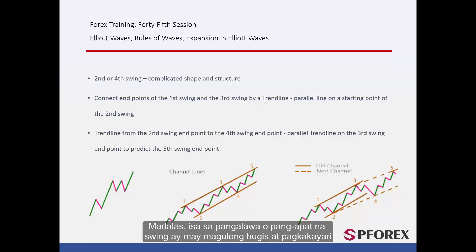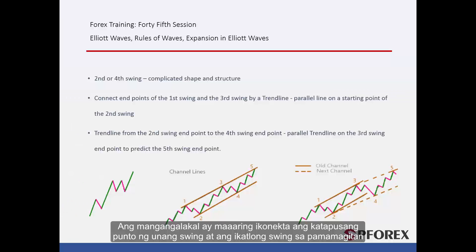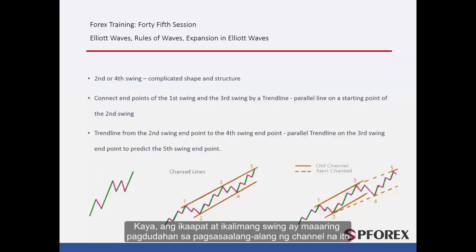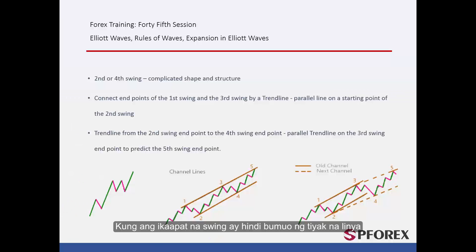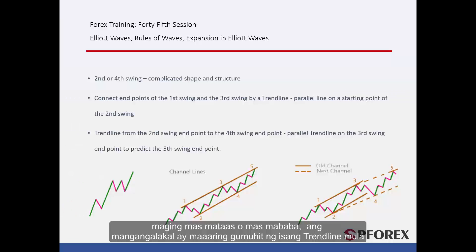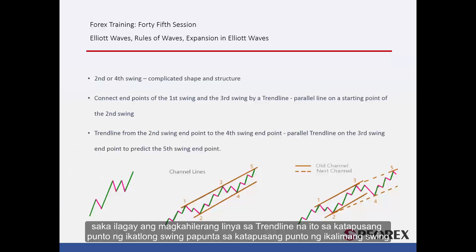Most of the time, one of the second or the fourth swing may have a complex shape and structure. A trader can connect the endpoints of the first swing and the third swing by a trend line, then place a parallel line on the starting point of the second swing. Hence, the fourth and fifth swing can be speculated using this channel. If the fourth swing does not form on the defined line — whether higher or lower — a trader can draw a trend line from the second swing endpoint to the fourth swing endpoint, then place a parallel line on the third swing endpoint to predict the fifth swing endpoint.